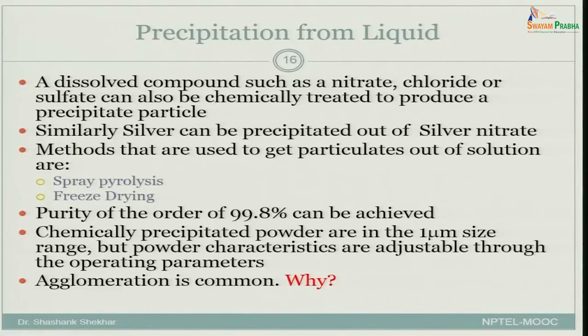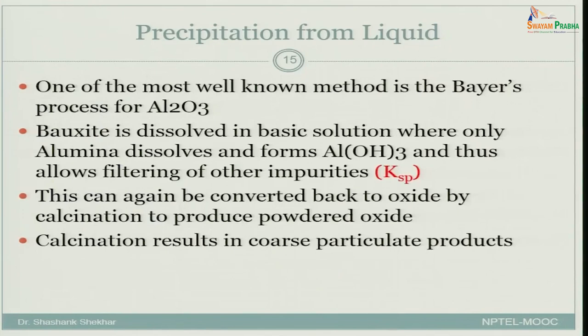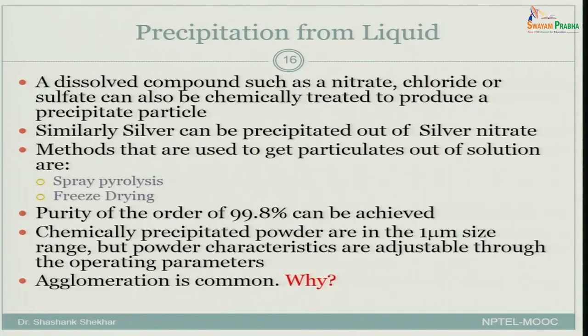We will continue from where we left. We were discussing about one of the manufacturing techniques for powder, which is precipitation from liquid. We looked at some of the methods including the Bayer technique, and others involving compounds such as nitrate, chloride, or sulphate from which you can precipitate out powder.